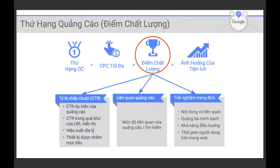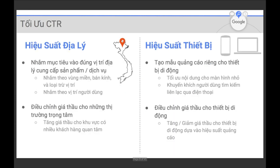Để tối ưu hóa CTR theo địa lý, bạn cần nhắm mục tiêu đúng vị trí cung cấp sản phẩm dịch vụ. Nếu không cung cấp dịch vụ tại tỉnh thành lân cận thì chỉ chọn tỉnh thành bạn cung cấp. Có thể nhắm mục tiêu theo bán kính — ví dụ trong vòng 20km quanh doanh nghiệp. Nên kết hợp nhắm mục tiêu với loại trừ những vị trí địa lý mà bạn không cung cấp dịch vụ.